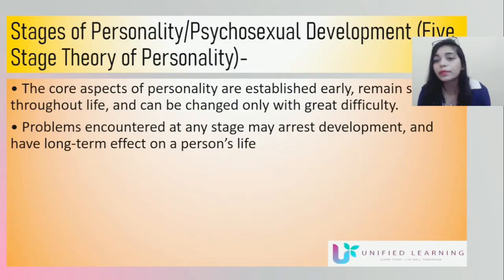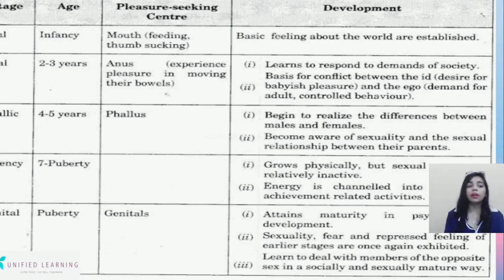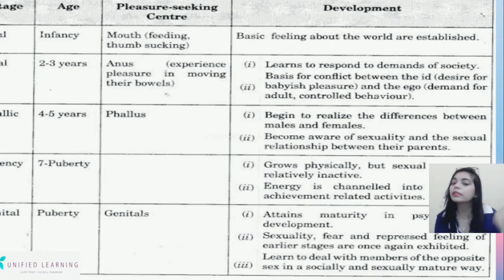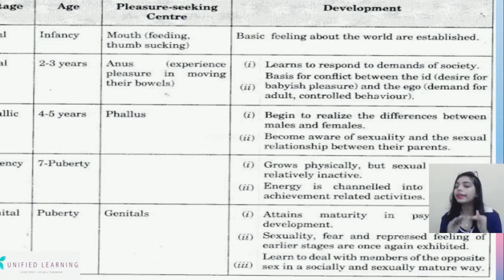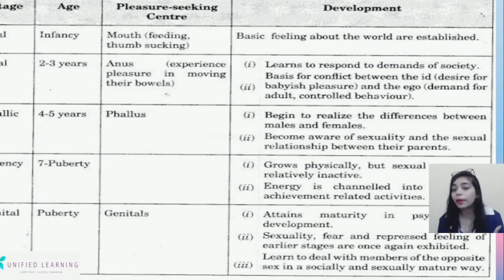Freud gave five stages of personality. The first is the oral stage, occurring in infancy, where the pleasure-seeking focus is the mouth — feeding, thumb sucking, babbling — and basic feelings about the world are established. The second is the anal stage, between two and three years of age, where pleasure is experienced through the bowels. The child begins to learn to respond to society's demands, creating a conflict between the Id's desire for babyish pleasure and the Ego's demands for adult-controlled behavior.